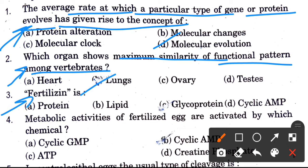Fertilizin is what? Options are protein, lipid, glycoprotein, or cyclic AMP. The answer is glycoprotein.